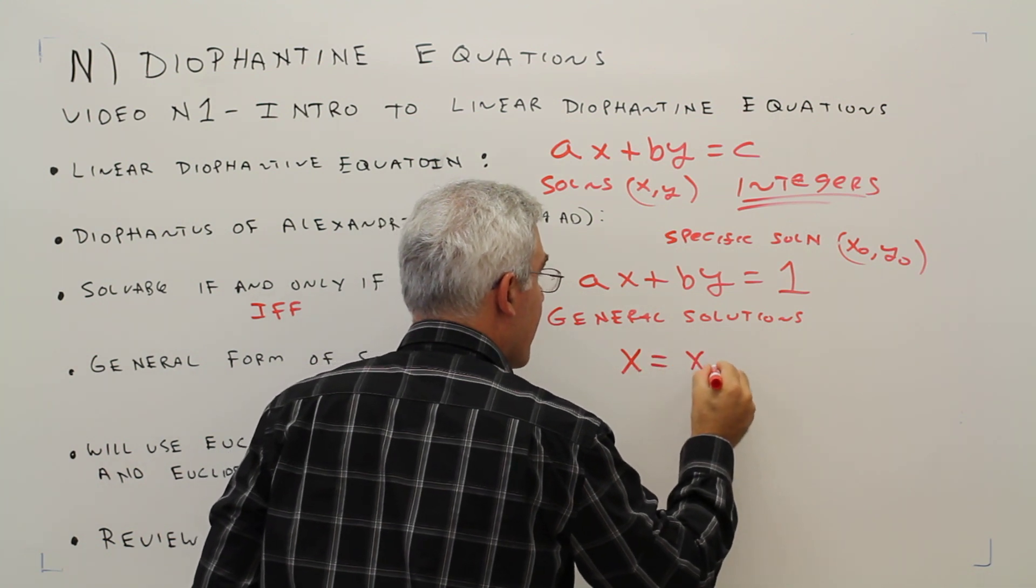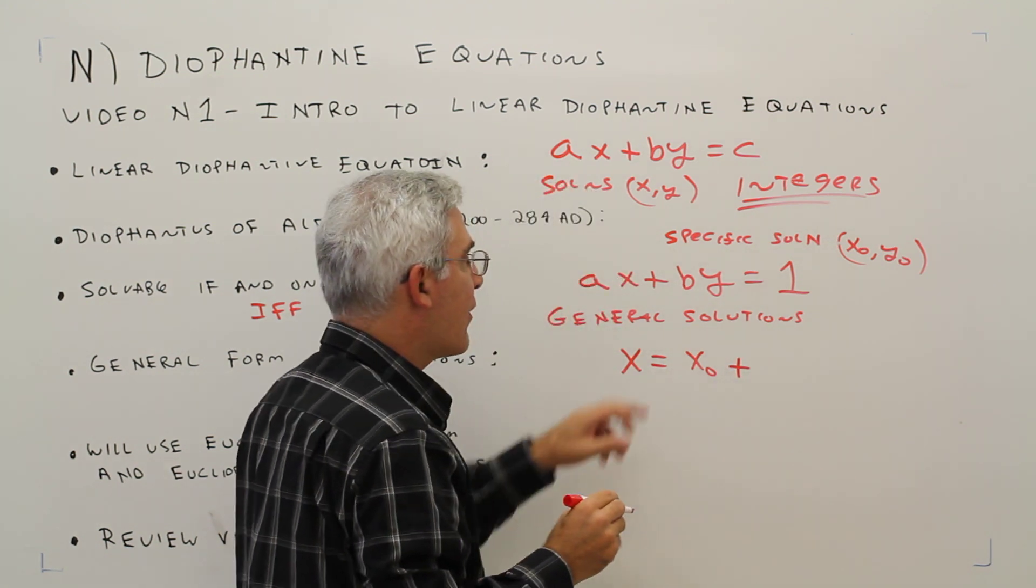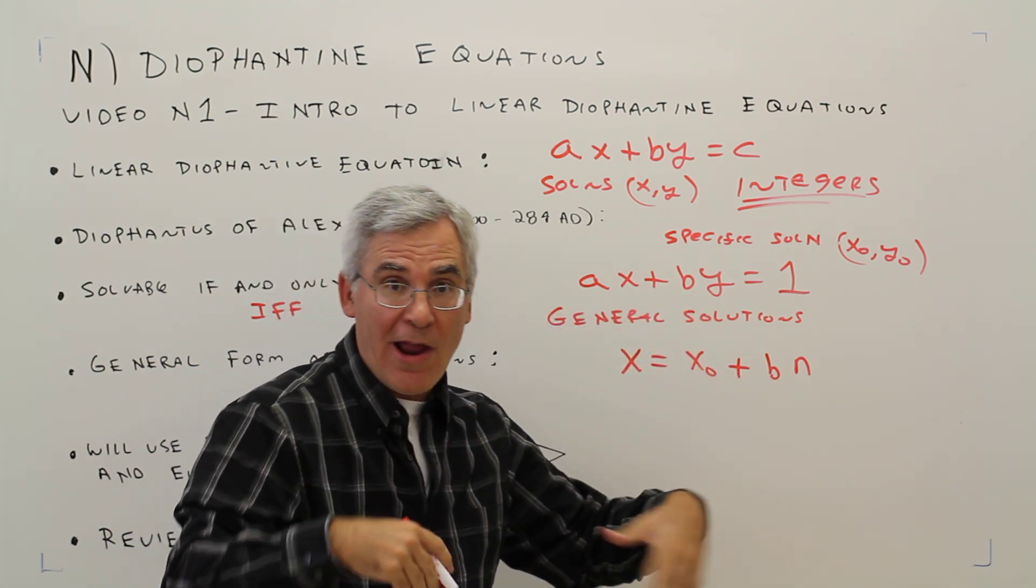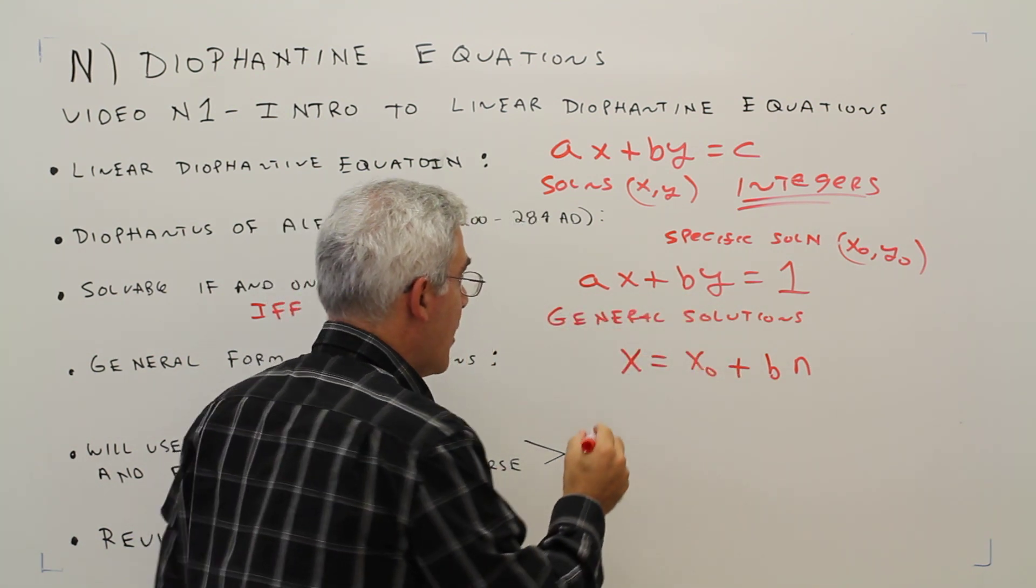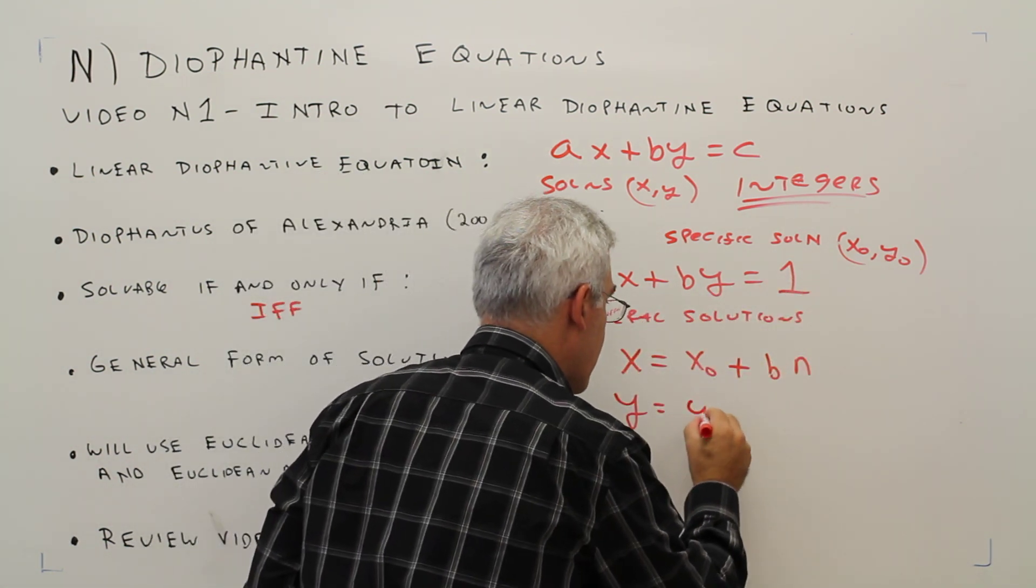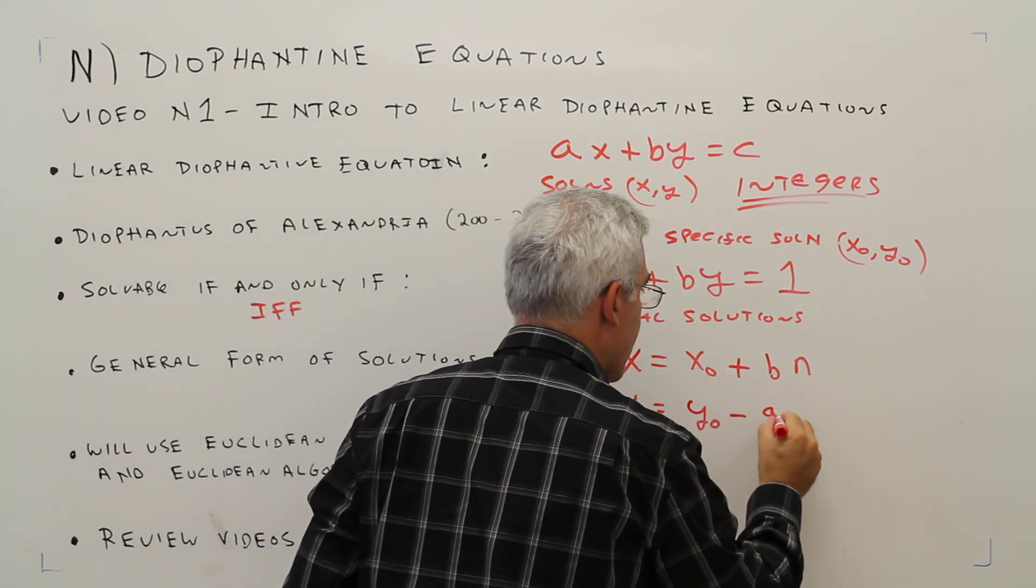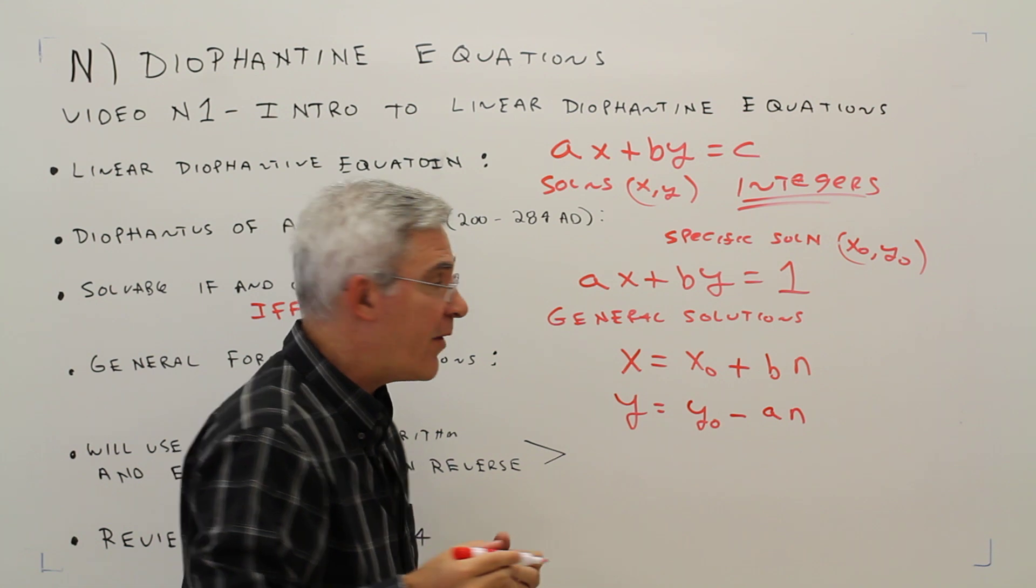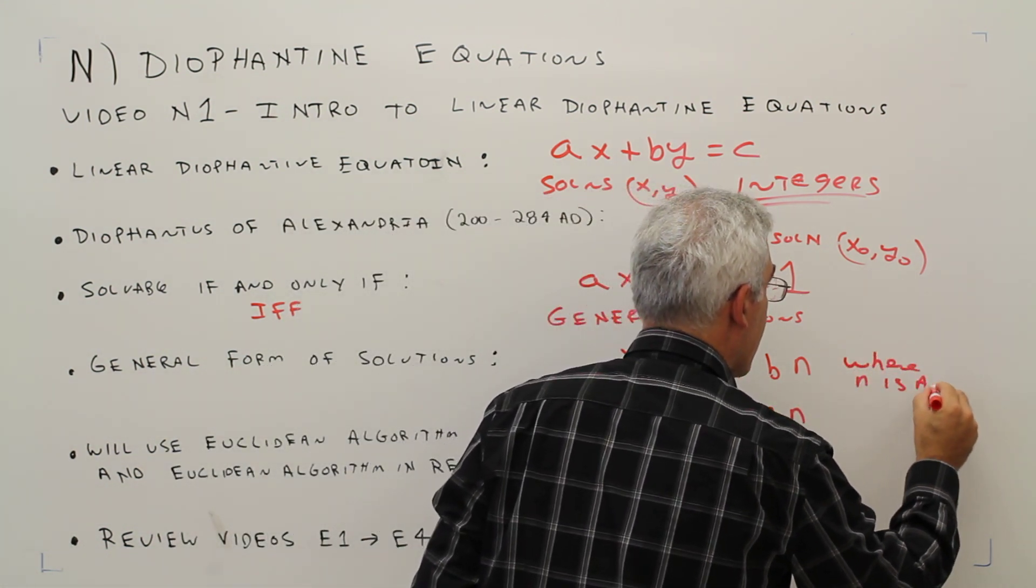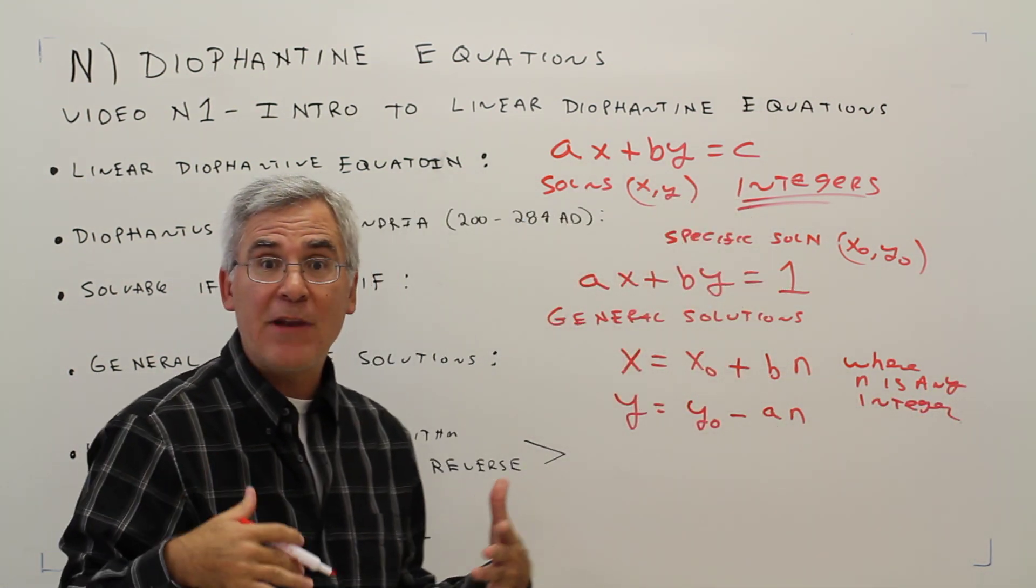Then the general solutions will be as follows. X equals that specific solution plus B times N, where N is any integer. And then Y will be, take a guess, Y naught. However, in this case, minus AN. And again, I'll emphasize where N is any integer. Positive, negative, or zero.